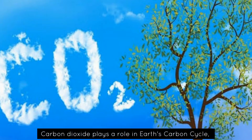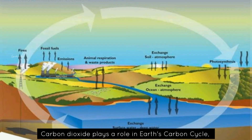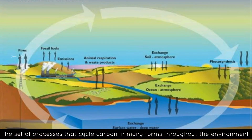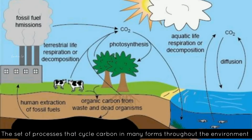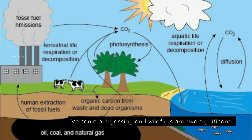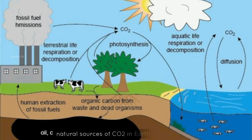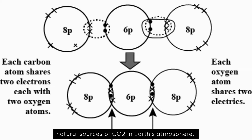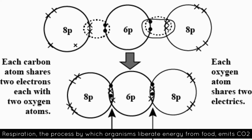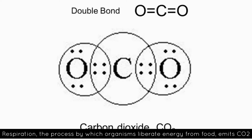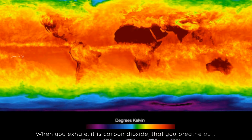Carbon dioxide plays a key role in Earth's carbon cycle, the set of processes that cycle carbon in many forms throughout our environment. Volcanic outgassing and wildfires are two significant natural sources of carbon dioxide in Earth's atmosphere. Respiration, the process by which organisms liberate energy from food, emits carbon dioxide. When you exhale, it is carbon dioxide that you breathe out.